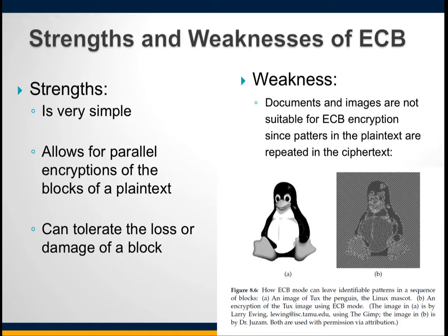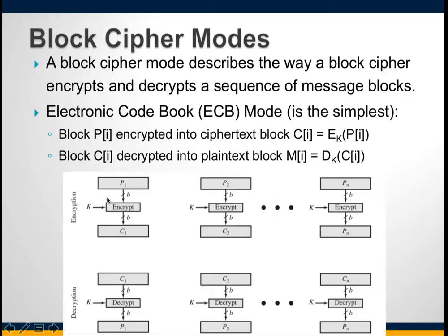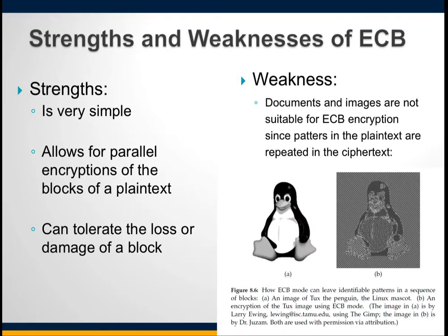ECB strengths: it is simple, allows for parallel encryption of blocks (making it faster), and can tolerate the loss or damage of a single block. Weaknesses: ECB is not suitable for encrypting images or data with patterns, as those patterns are revealed in the ciphertext. In the upcoming lab exercise, we will see a demonstration of this weakness.